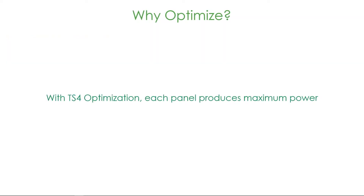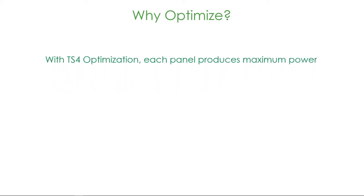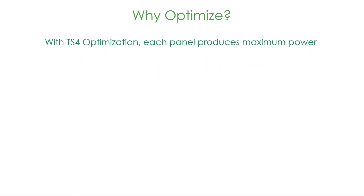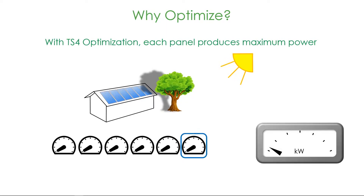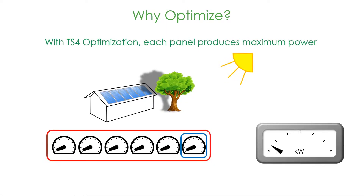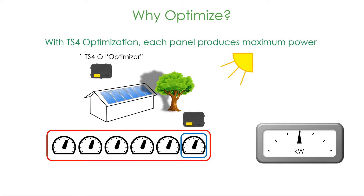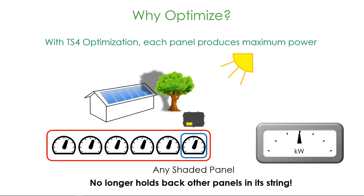So again, why optimize? Because with TS4 optimization, each panel produces maximum power. Deploy a TS4 cover with optimization on shaded panels, and those panels no longer hold back the performance of the panels around them, increasing energy yield and ROI.